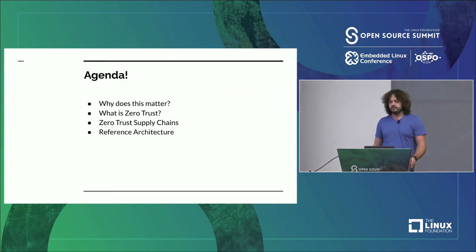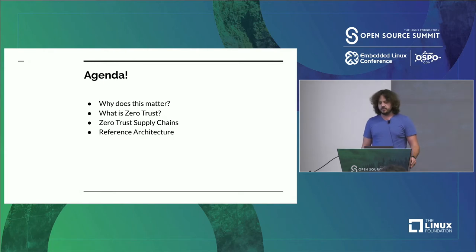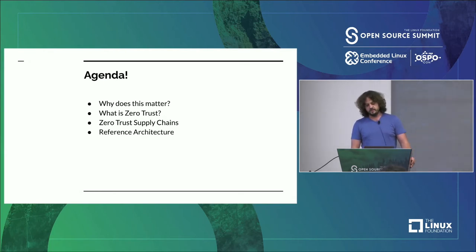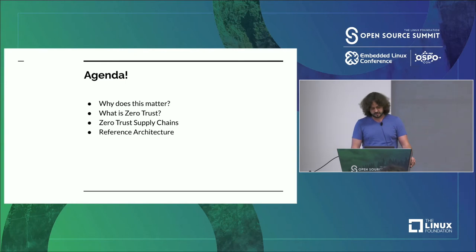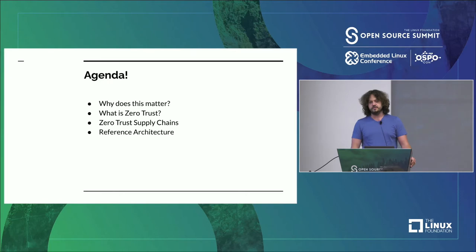Here's what we're going to cover: why does this matter, why are supply chain attacks important now, why do we need to protect ourselves against them? I'll explain the zero trust buzzword and then jump into some zero trust supply chain architecture and demos showing how we can actually use some of this today using projects like Tekton, Sigstore, SPIFFE, SPIRE, and In-toto.